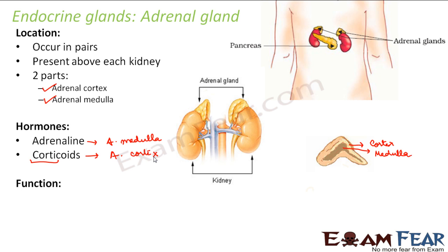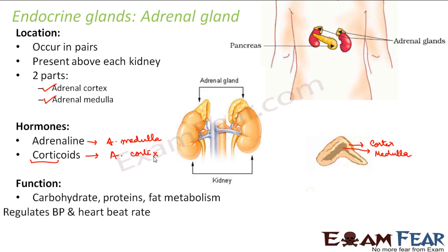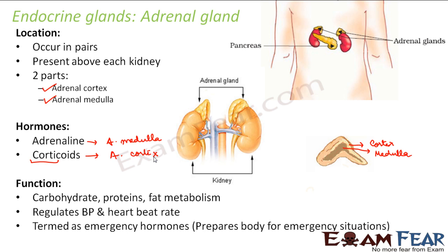Let us look at their functions. They help in carbohydrate, protein, and fat metabolism. They also regulate blood pressure and heartbeat rate. Metabolism is needed for sustaining life, and hormones like thyroxine and adrenaline help in metabolism. Because they regulate blood pressure and heartbeat rate, they are known as the emergency hormones.